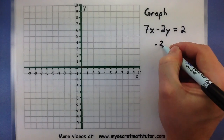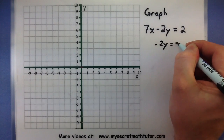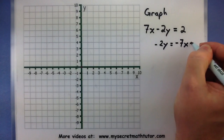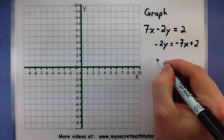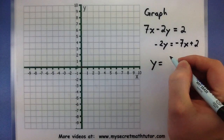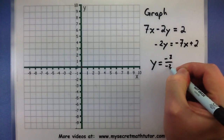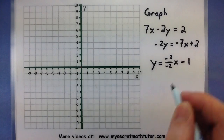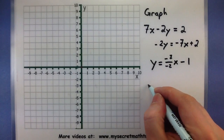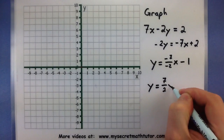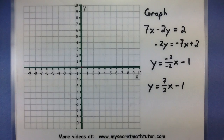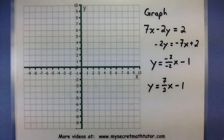I'm going to start by subtracting 7x from both sides. Now I'll divide both sides by negative 2 and simplify the negatives — a negative divided by a negative is positive. So I have 7 halves x minus 1. Now it's in slope-intercept form, and I can read that the y-intercept is negative 1 and the slope is 7 halves. Perfect — now we can draw this line.